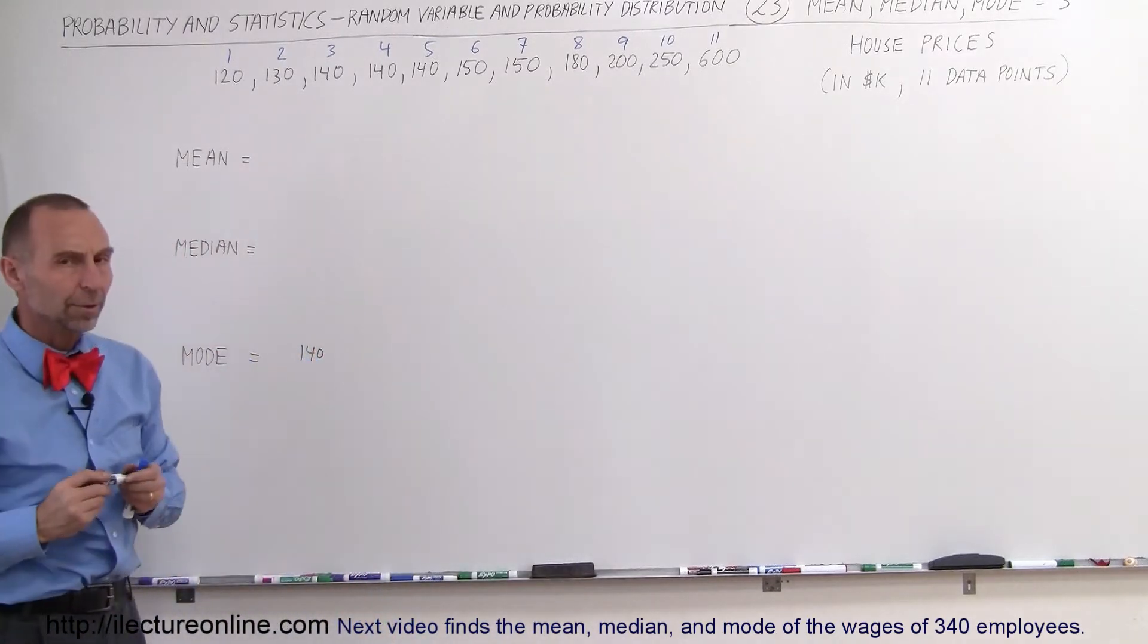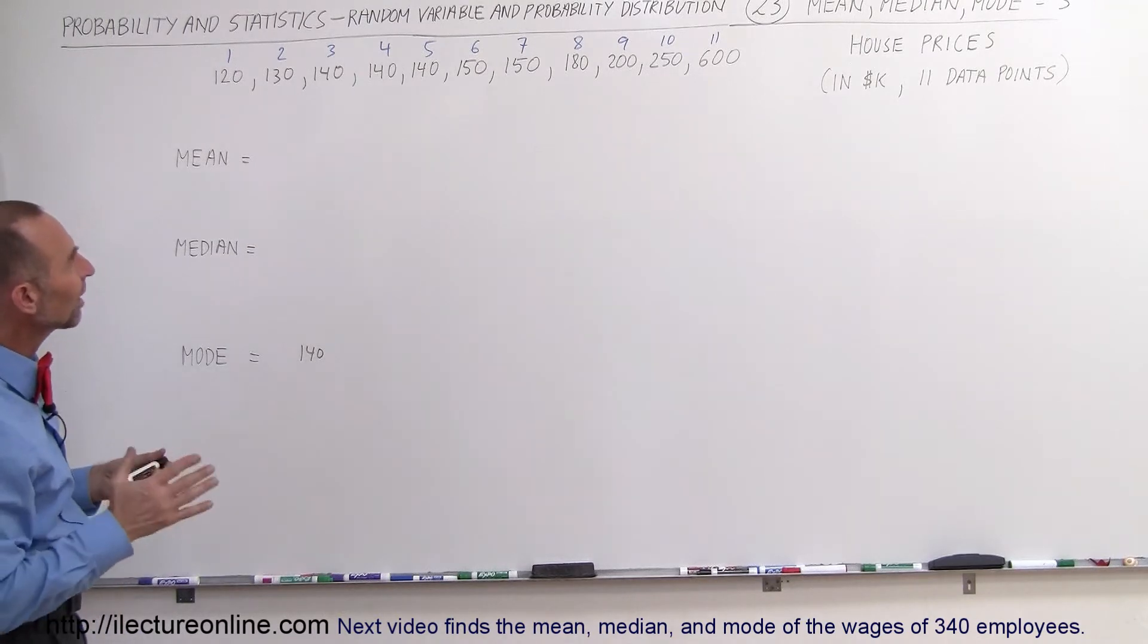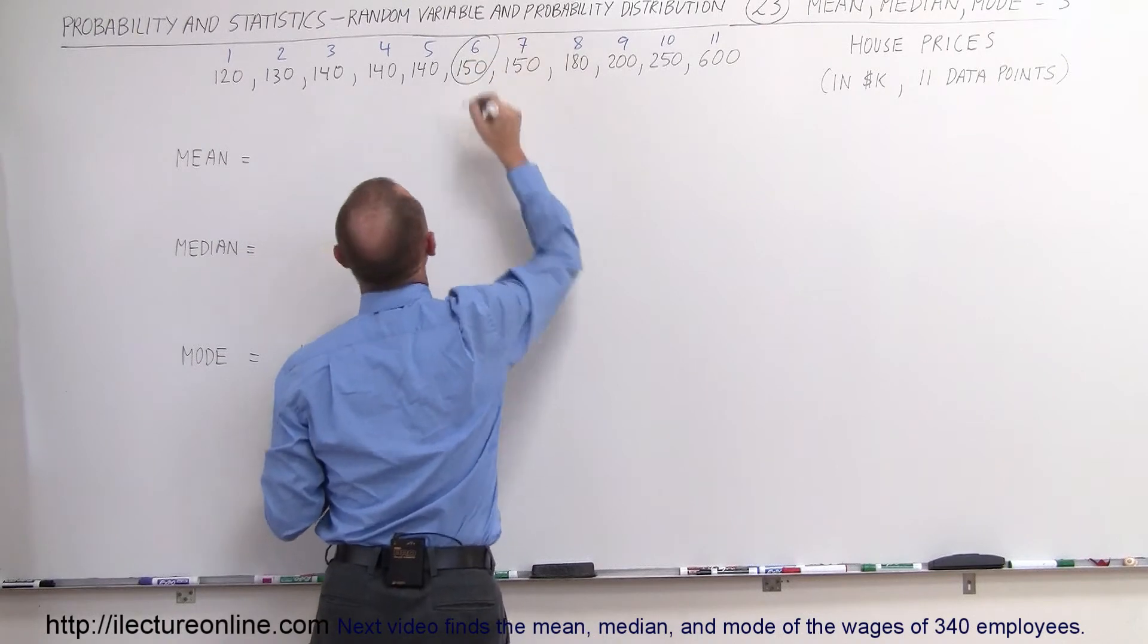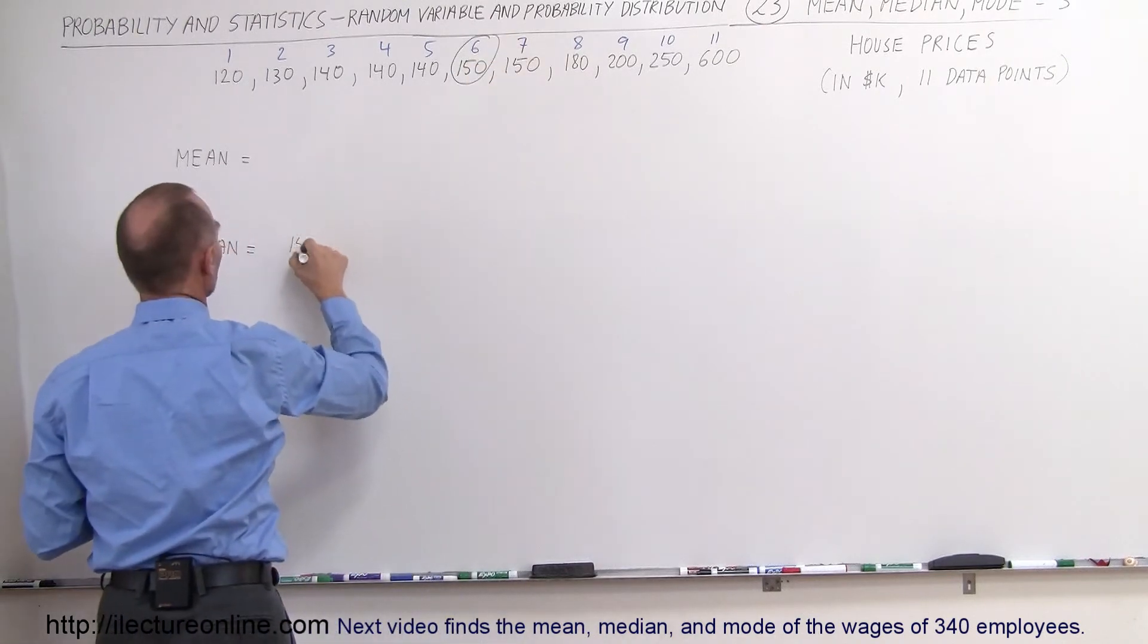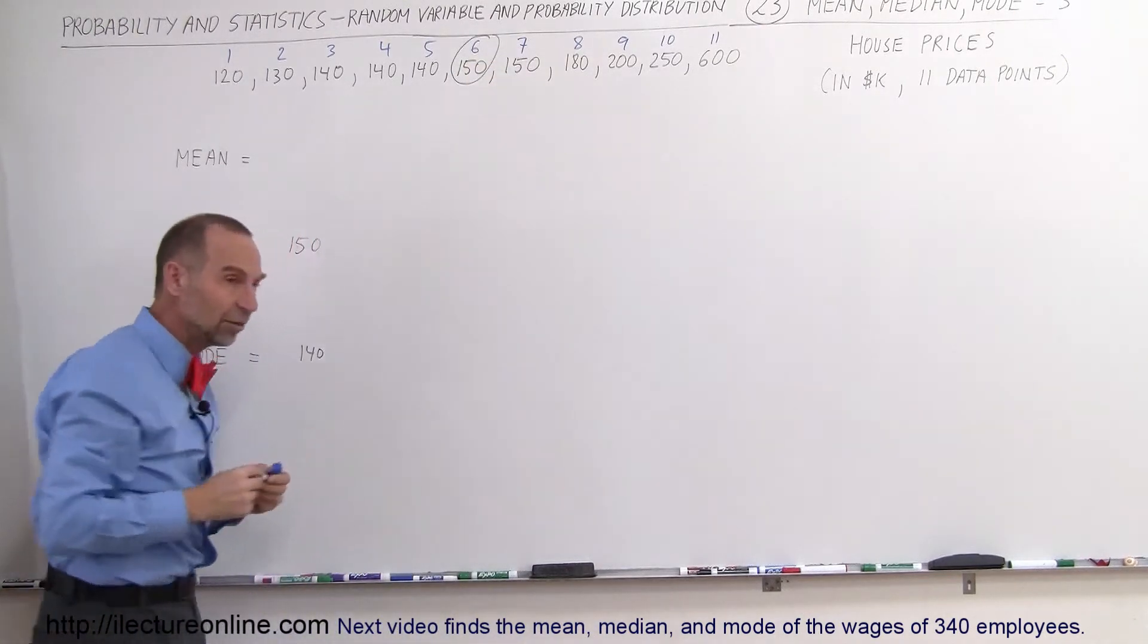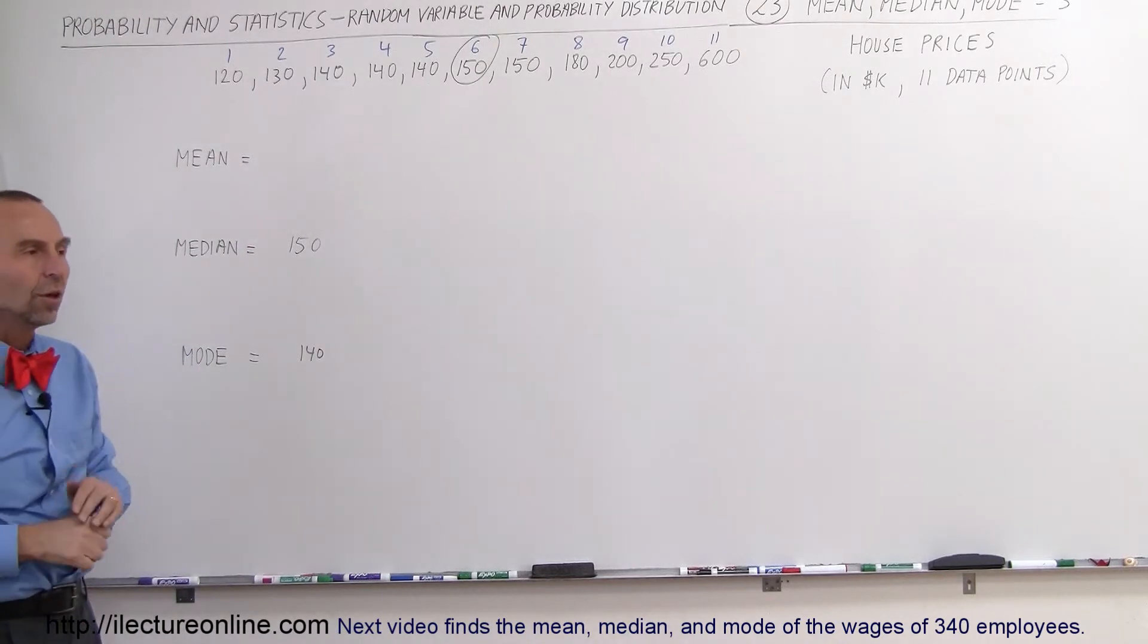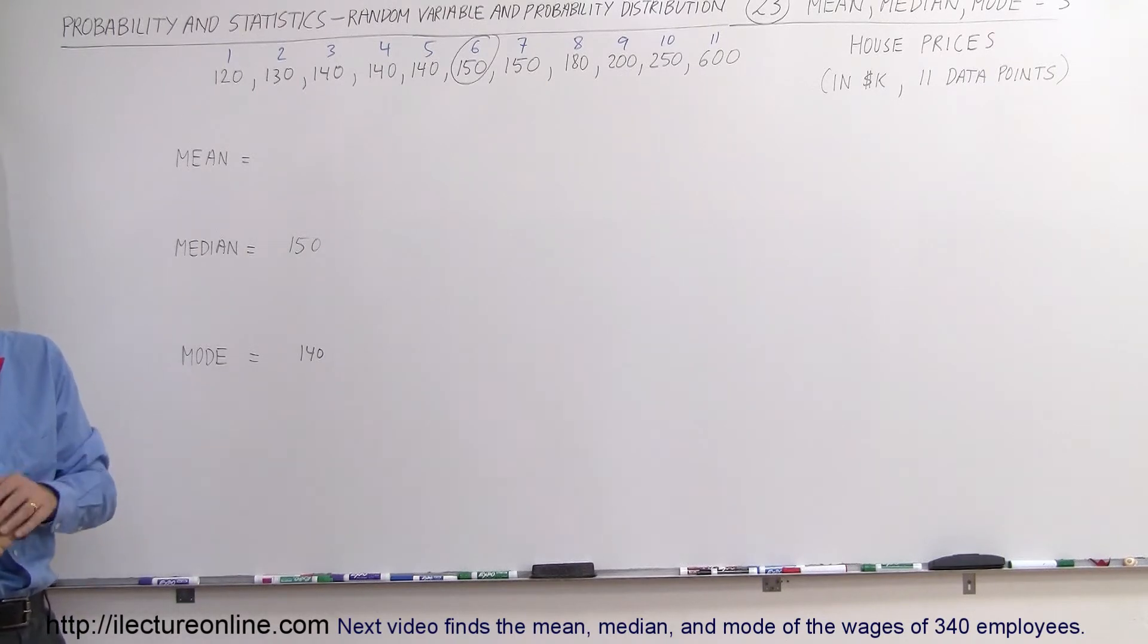The median is the middle number. So the middle number would in this case be the sixth number, this one right there. So the median would be $150,000. If someone asks what is the median price of houses in that town, you'd say $150,000. The idea is that if you move to that town and want to buy a house, you expect to pay somewhere around the median price if you're looking for a typical average house in that town.